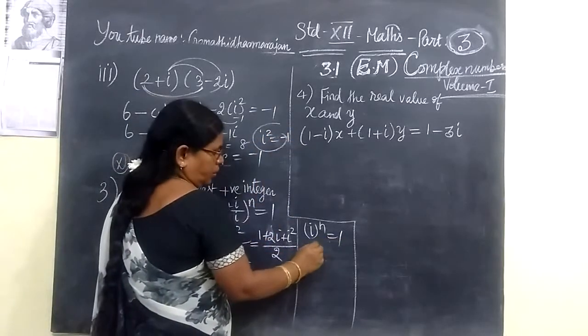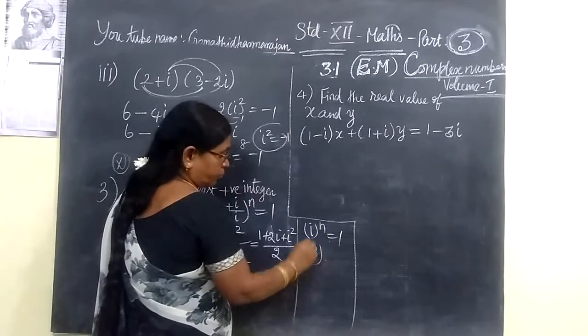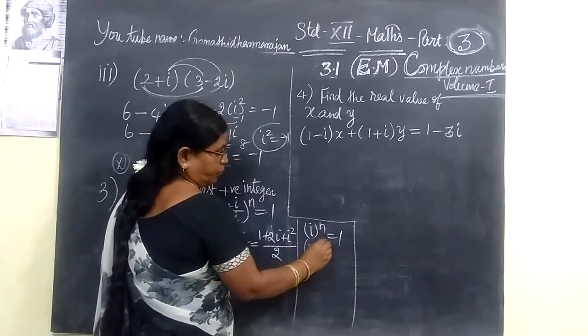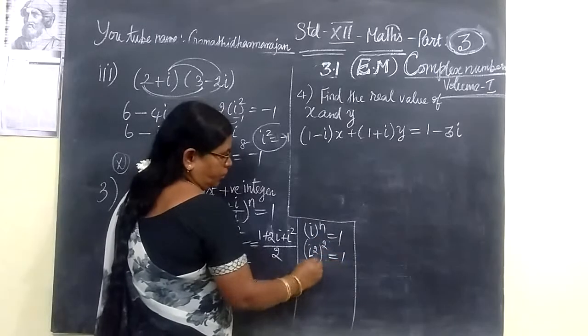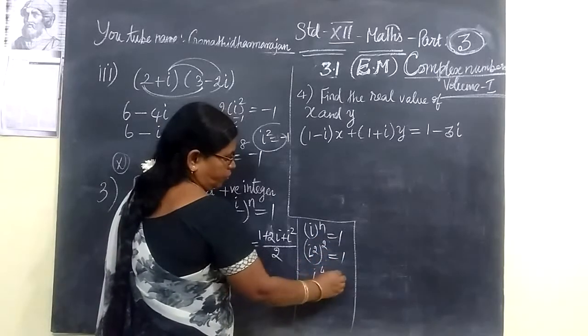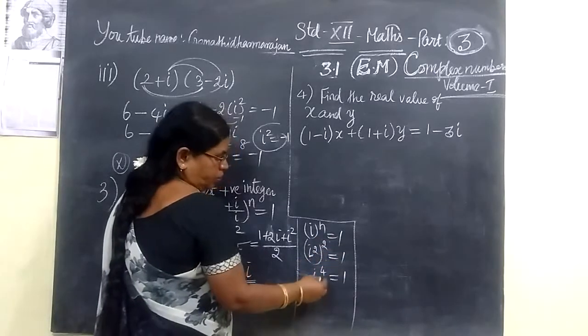We know i squared equal to minus 1. So this is plus 1. This is i squared into i squared, 1. This is equal to 1. Then i power 4, this is equal to 1.